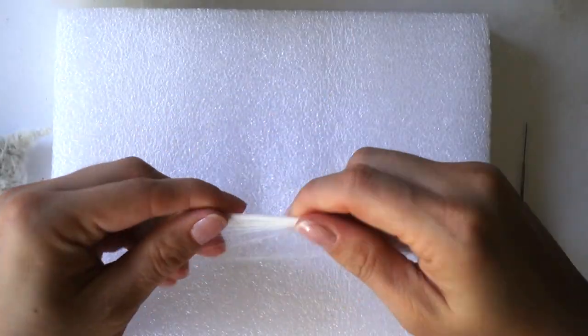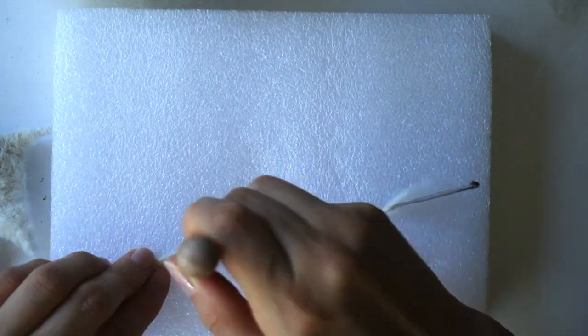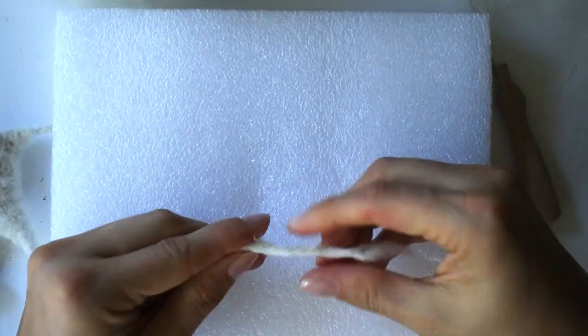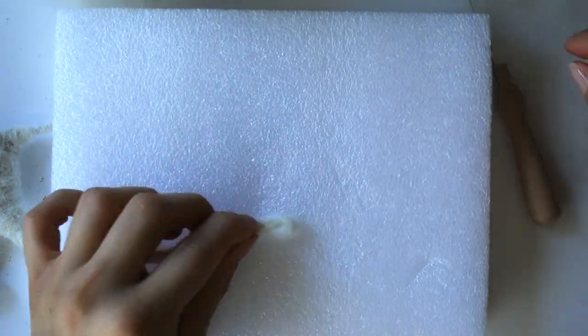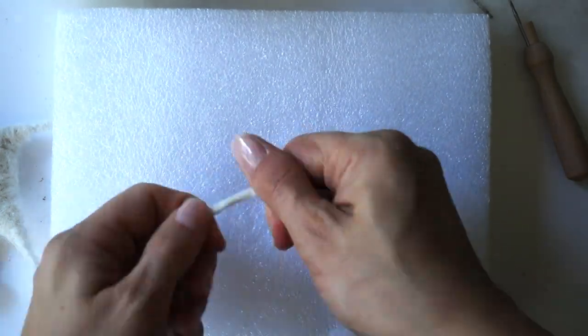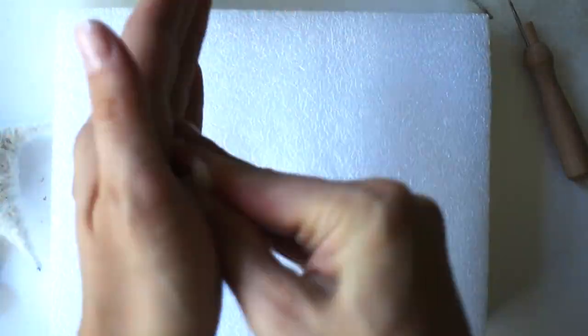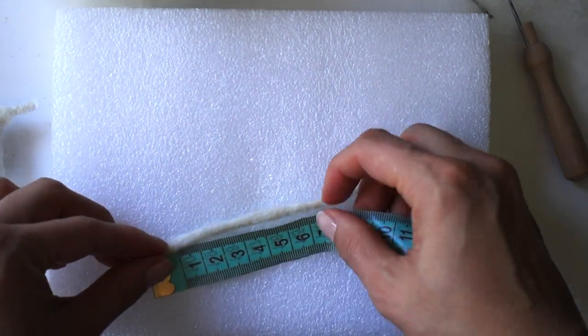To create the tail, I'm taking a long piece of wool and rolling it with my hands, periodically stabbing it with the needle, but mostly rolling it with my hands. Once it looks like a tail, I'm going to trim it to about 6 cm.